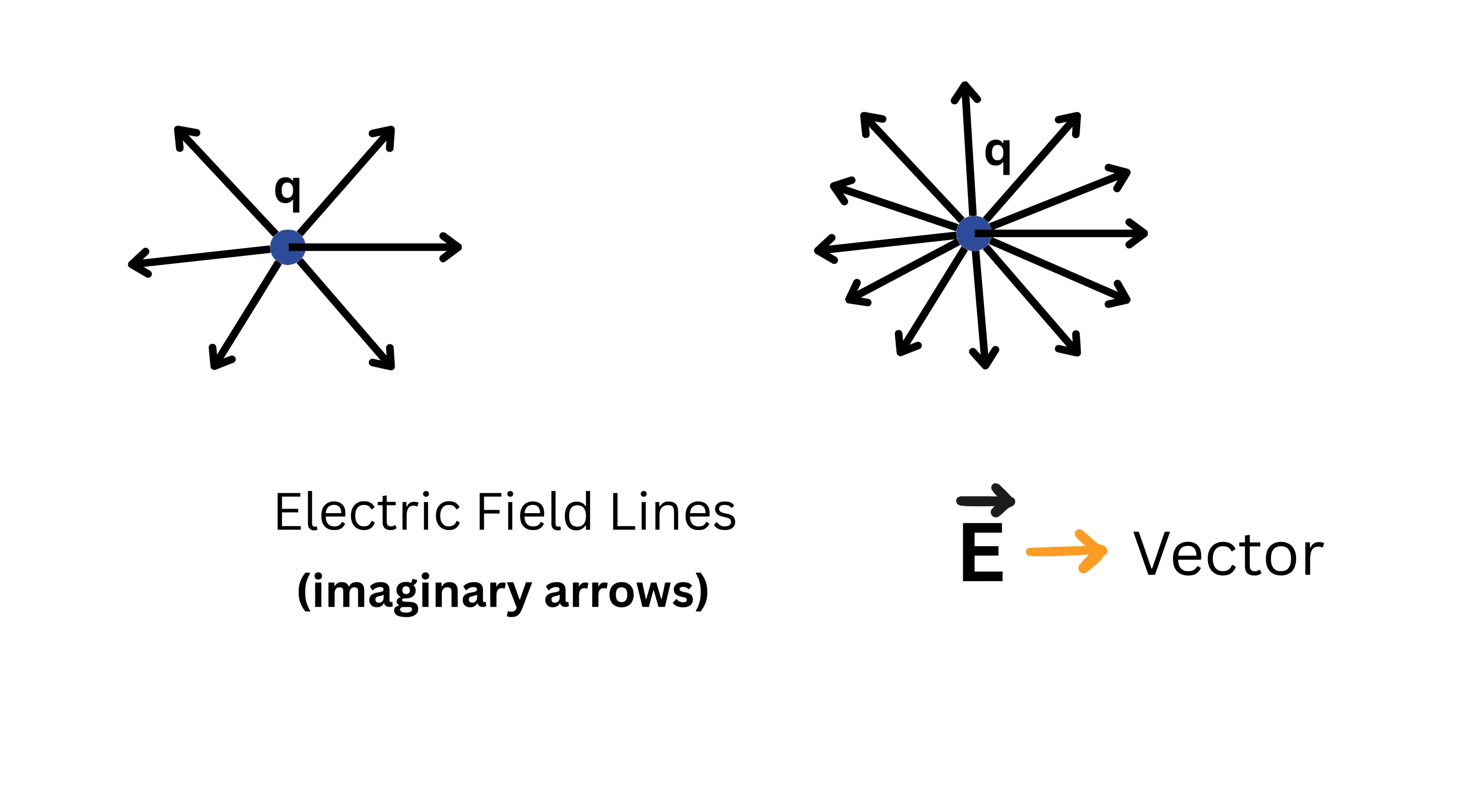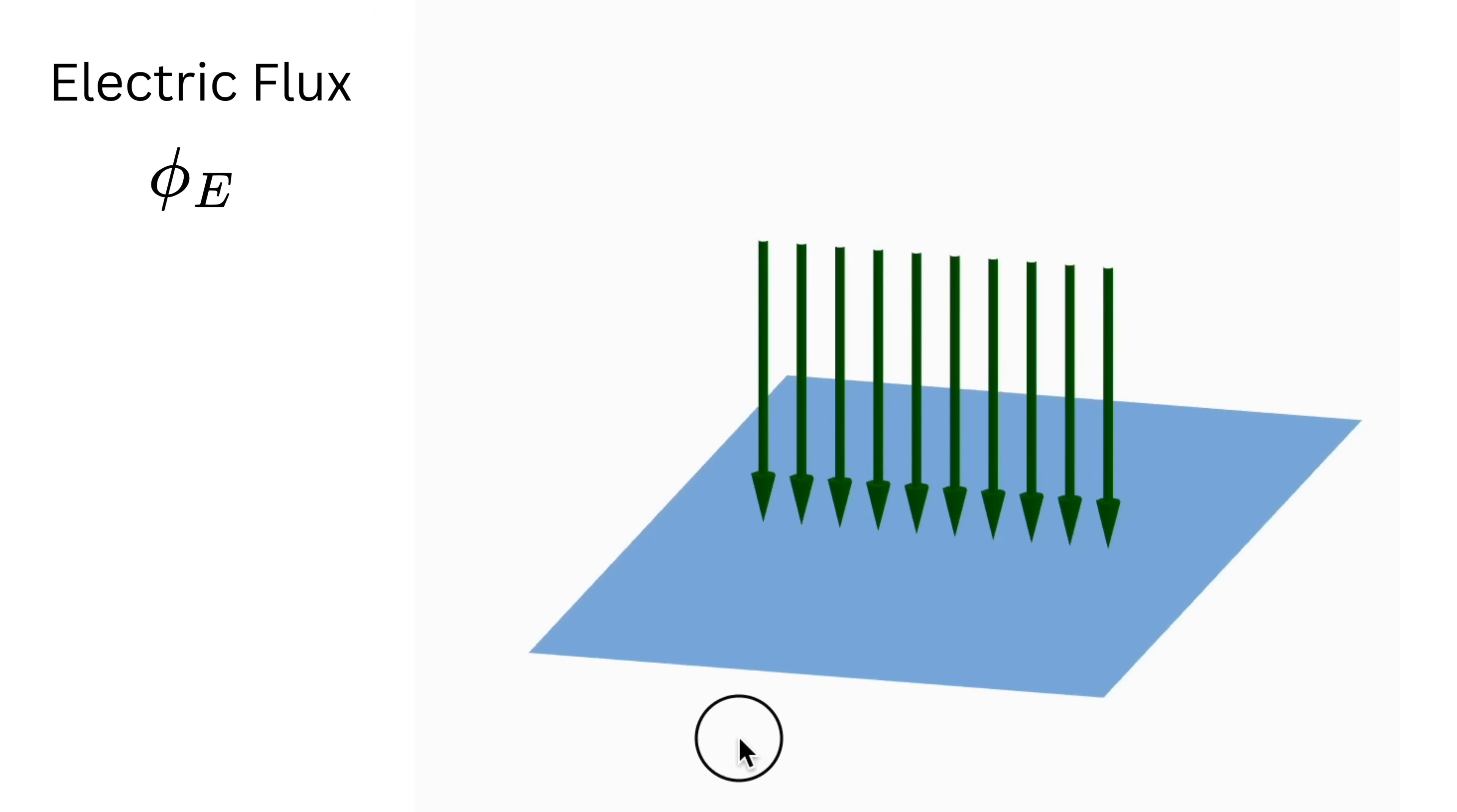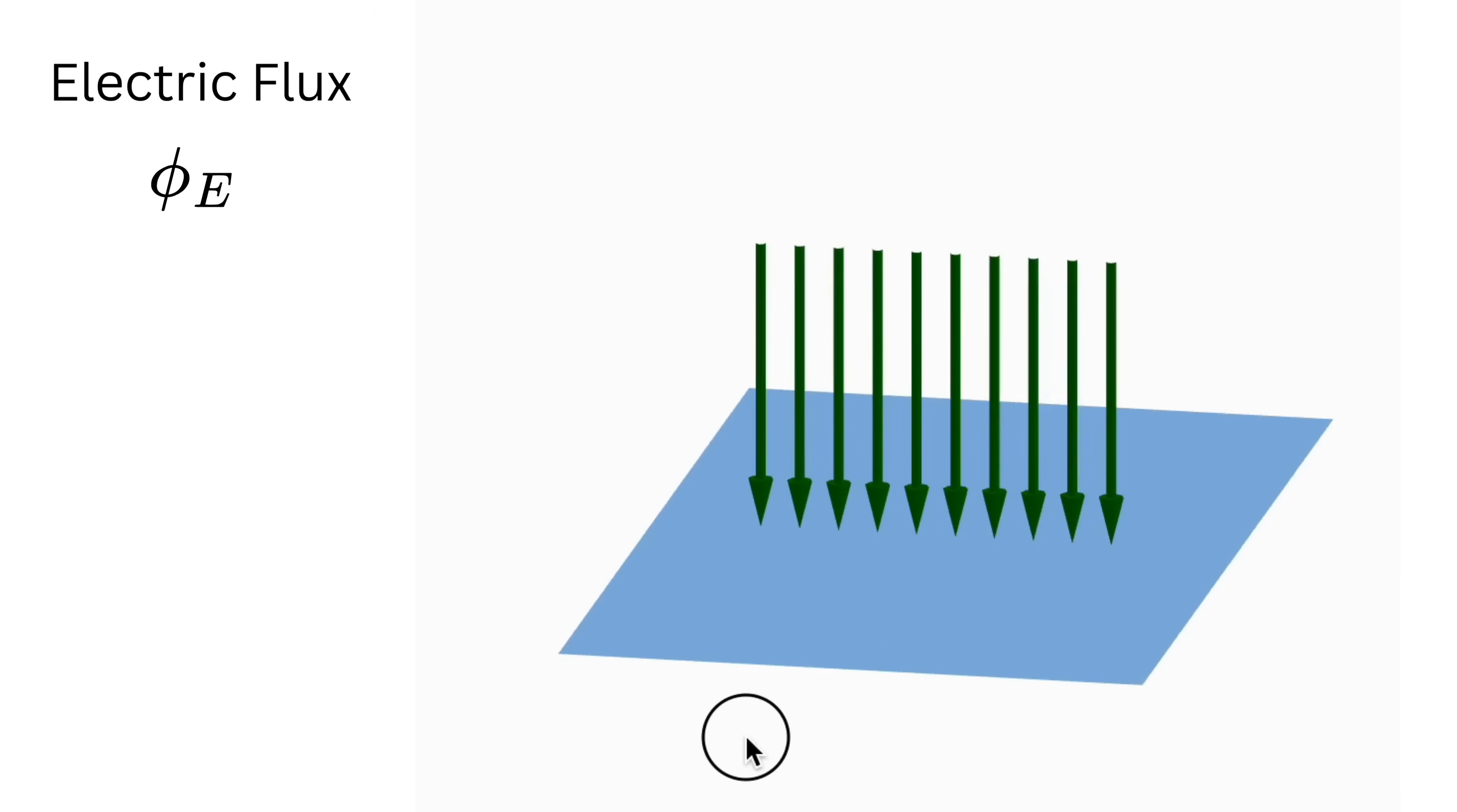Now electric flux, which we represent using this symbol phi with subscript E denoting it's an electric flux, is a number that you get when you count how many of those field line arrows pass through a surface. Imagine you have a flat sheet and 10 straight arrows representing the electric field lines pointing toward it. If the sheet is held perpendicular to the arrows, all 10 arrows pass straight through, so the flux is 10 units.